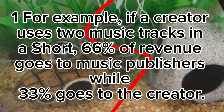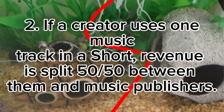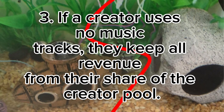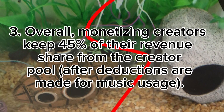Here's the music usage breakdown: if a creator uses two music tracks in a Short, 66% of revenue goes to music publishers while 33% goes to the creator. If a creator uses one music track, revenue is split 50/50 between them and music publishers. If a creator uses no music tracks, they keep all revenue from their share of the creator pool. Overall, monetizing creators keep 45% of their revenue share from the creator pool after deductions are made for music usage.